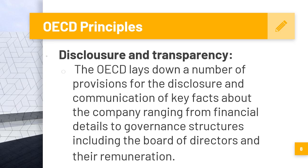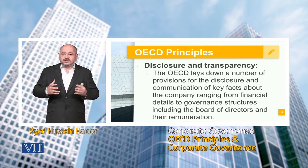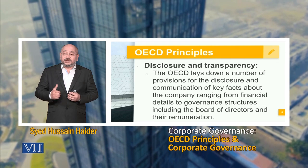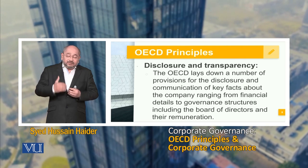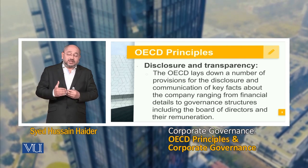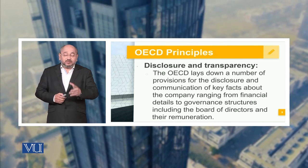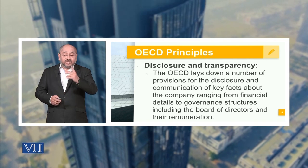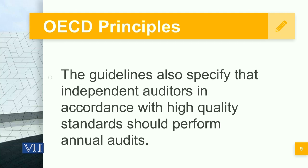Another very important principle is disclosure and transparency. The OECD lays out a number of provisions for disclosure and communication of key facts about the company, ranging from financial details to governance structures, including the board of directors and their remuneration. The corporate structure has to be defined, and whatever emoluments, benefits, and nominations are given must also be shared. All financial dealings of the company have to be presented to the board of directors on an annual basis.